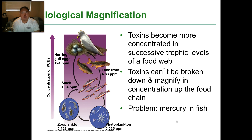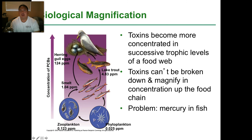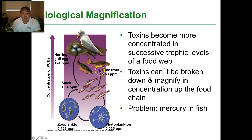Another thing you need to know is biomagnification, short for biological magnification. Toxins become more concentrated the further up a food chain you go. As you go up and up, they can't be broken down, and they magnify as you go up the food chain — hence biomagnification. For example, a factory dumps toxic waste into the ocean. The plankton eat it. These fish eat a whole bunch of plankton, so now they have one part per million. The trout eat a whole bunch of smelts, so now they have four parts per million. And then the birds eat these trout, and their eggs actually have 124 parts per million of the toxin.